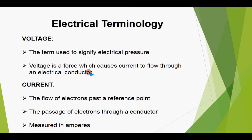Voltage is the term used to signify electrical pressure — it is a force which causes current to flow through an electrical conductor. Current is the flow of electrons passing through a specific point in a specific time, and its unit is the ampere. In advanced applications, sub-units of ampere are used because the ampere is a very large quantity, so milliamperes and microamperes are commonly used.